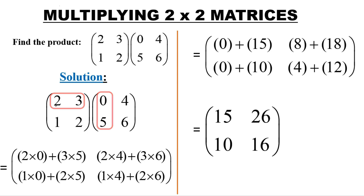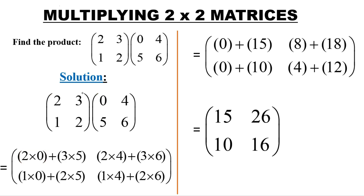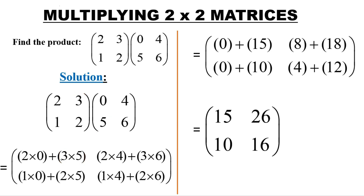We get the product of 2 by 0, then we add the product of these elements, 3 multiplied by 5. When we get that sum, it will give us the first element in the first row.